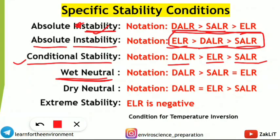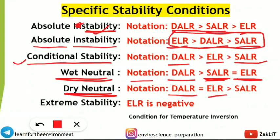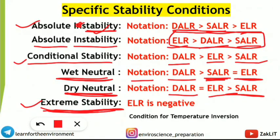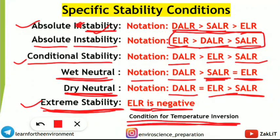Next is the wet neutral condition. A question was asked on this two years before. In wet neutral condition, the dry adiabatic lapse rate is greater than the saturated adiabatic lapse rate, but the saturated adiabatic lapse rate is equal to the environmental lapse rate — so SALR = ELR and DALR > SALR. In dry neutral condition, DALR = ELR and ELR > SALR. Finally, extreme stability: do not confuse it with absolute stability. In extreme stability, the environmental lapse rate is negative.